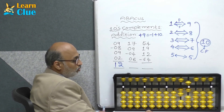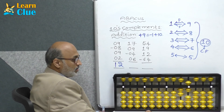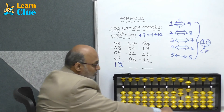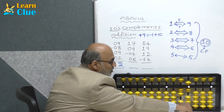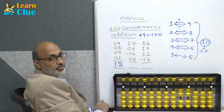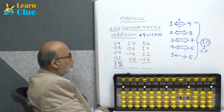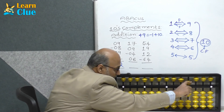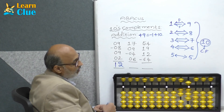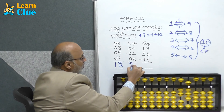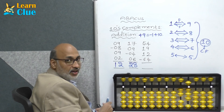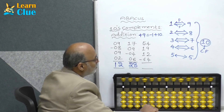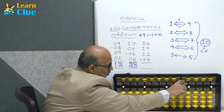Now they are asking minus 4. How to do minus 4? Try in 5s complements — minus 4 technique is nothing but plus 1 minus 5. Now they are asking plus 6 — is it possible? Yes, direct. What is the answer? Answer is 28. Now let's do the next problem: 54 — that is 50 plus 4.